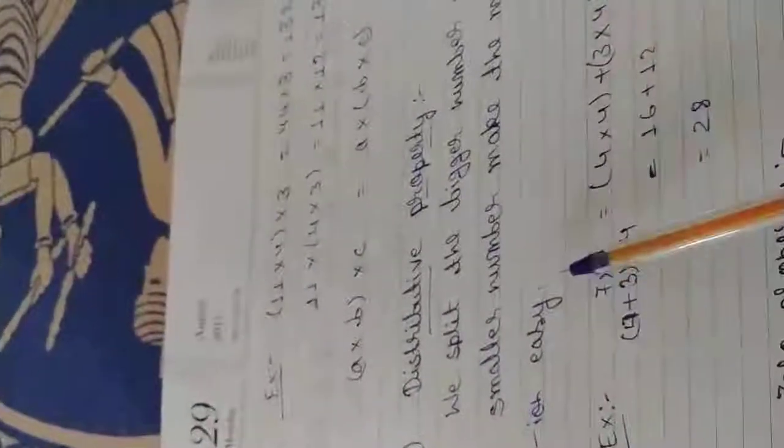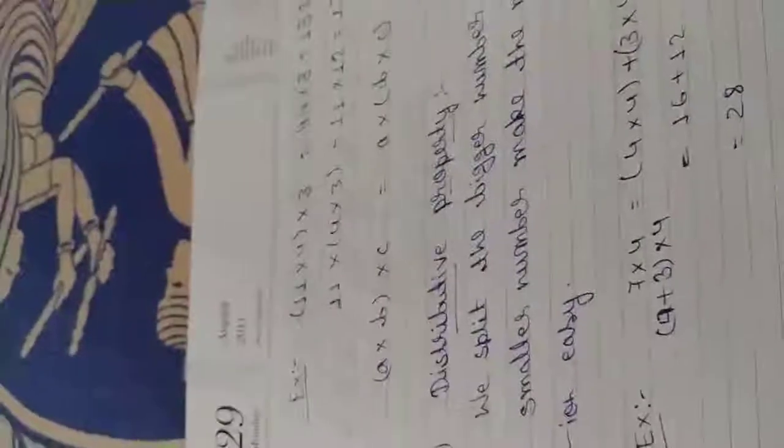Distributive Property. We split the bigger number into smaller numbers to make the multiplication easy. We use this property to change the bigger number into smaller numbers.